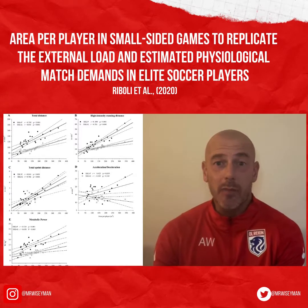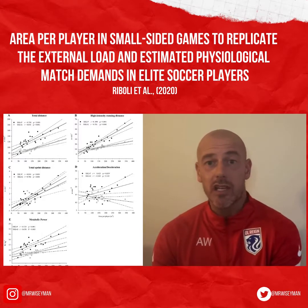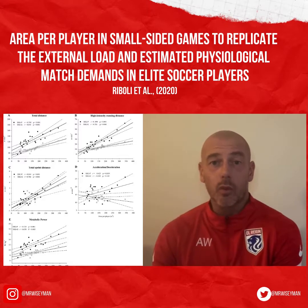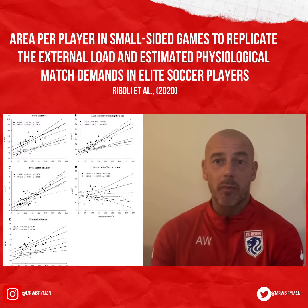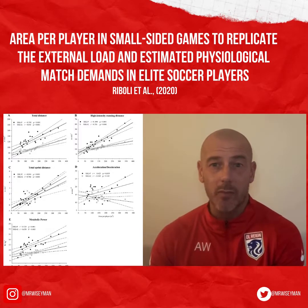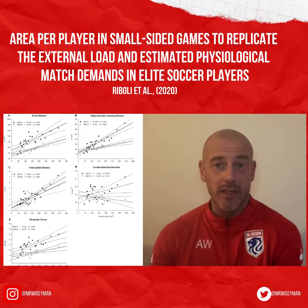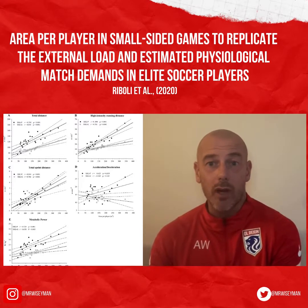As demonstrated in this paper, a high speed running load to replicate match demands without goalkeepers was achieved at 166 metres squared per player. However, once goalkeepers are introduced, the area per player changes to 262 metres squared to gain the high speed running load required to replicate match demands. Interestingly, to achieve sprint distance congruent with match demands, the area per player is approximately 300 metres squared per player with or without goalkeepers.